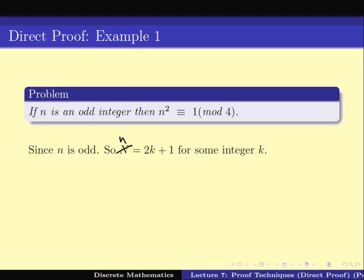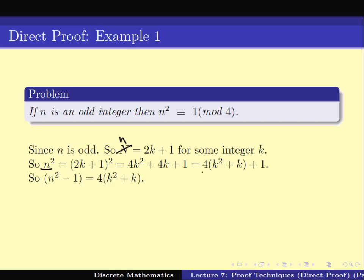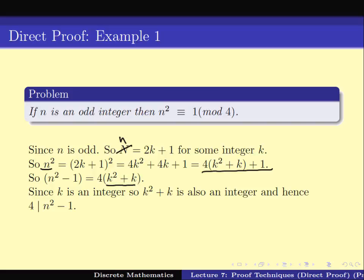If that is the case, then n² = (2k+1)² = 4k² + 4k + 1, which I collect as 4(k² + k) + 1. By rearranging, n² − 1 = 4(k² + k). Since k is an integer, k² is an integer, so k² + k is also an integer. Hence n² − 1 is 4 times some integer, or in other words n² − 1 is divisible by 4, which is exactly what we mean by n² ≡ 1 mod 4.